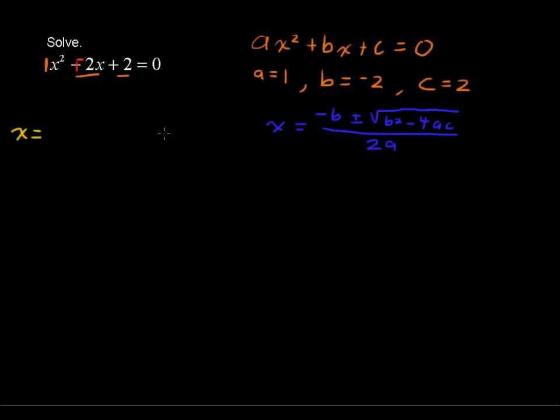x equals the opposite of b, well if b is negative 2, then the opposite of b is positive 2, so I'm going to write 2 plus or minus the square root of b squared. This is negative 2 quantity squared, and we'll come back and get negative 2 times negative 2 there, minus 4 times our a is 1, and our c is 2. So we've got the square root of all of that, all over 2a, all over 2 times our a is just 1.